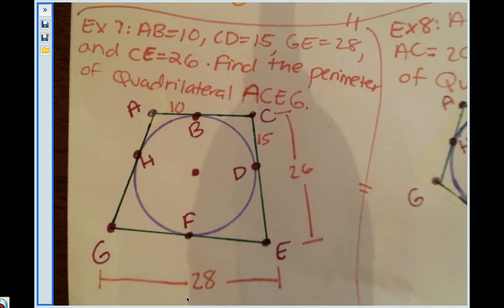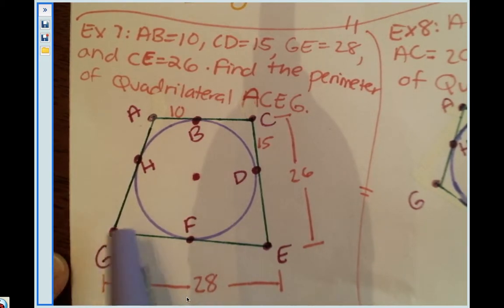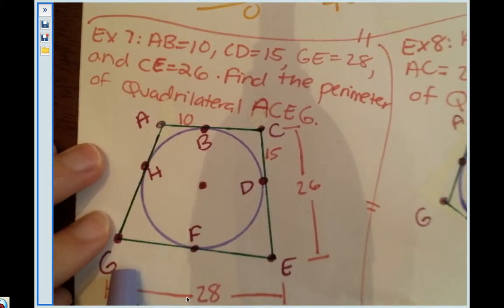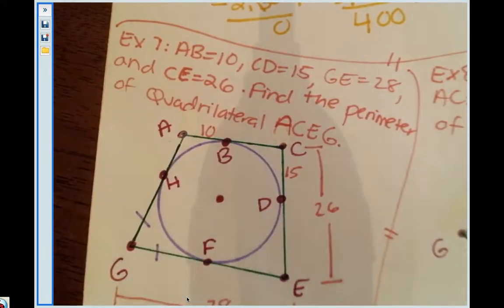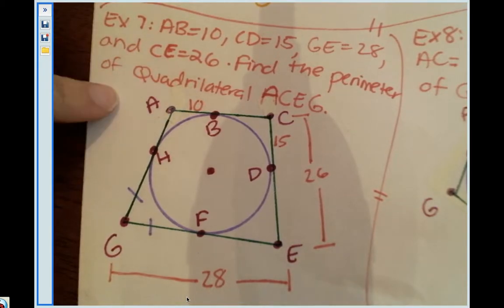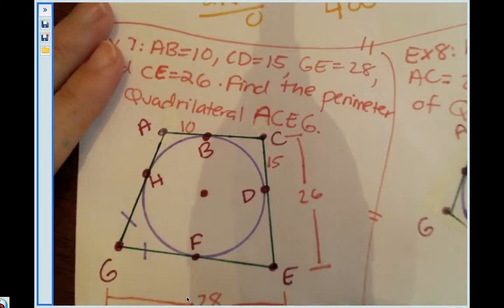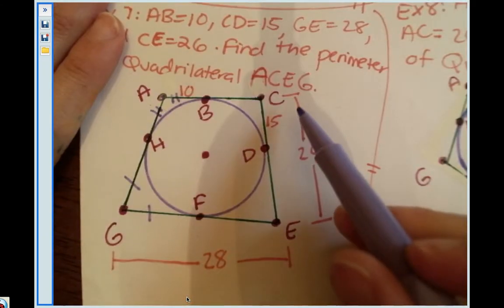This is a tangent segment, GF is a tangent segment and GH is also a tangent segment, and they both intersect in the same external point which is point G. So that means that this segment GH has to be congruent to GF. Same with these two, segment AH and segment AB are tangent segments that both intersect in point A, so that means that these two are congruent.